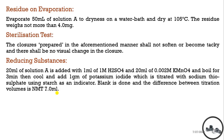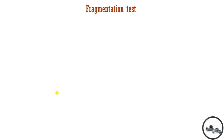Next is reducing substance. In 20 ml of solution, we add 1 ml of sulfuric acid and 20 ml of 0.02 molar potassium permanganate solution. We boil it for 3 minutes, then add 1 g of potassium iodide. We titrate against sodium thiosulfate solution using starch as indicator. A blank is performed and the difference between titration volumes should not be more than 7 ml.